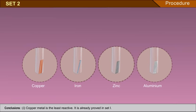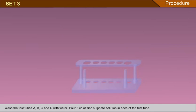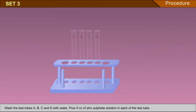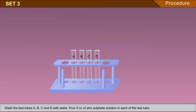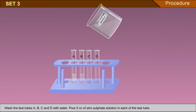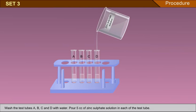Conclusions: 1. Copper metal is the least reactive — already proved in Set 1. 2. Iron metal is less reactive than zinc and aluminium. Set 3: Wash the test tubes A, B, C and D with water. Pour 5 cc of zinc sulphate solution in each test tube.